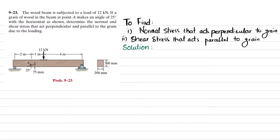Let's start with the solution. First, we will find the normal stress and shear stress at point A. Removing the roller support gives reaction force R1, and removing the pin support gives reaction R2. We will find R1 and R2 using the equations of equilibrium.